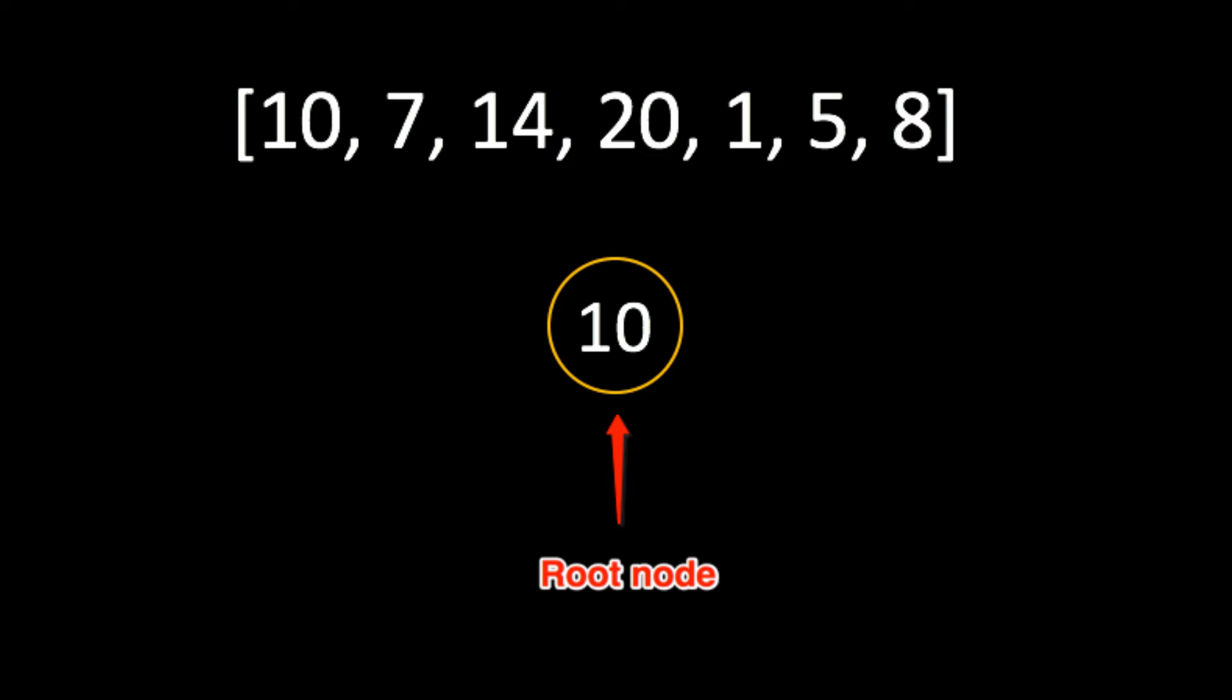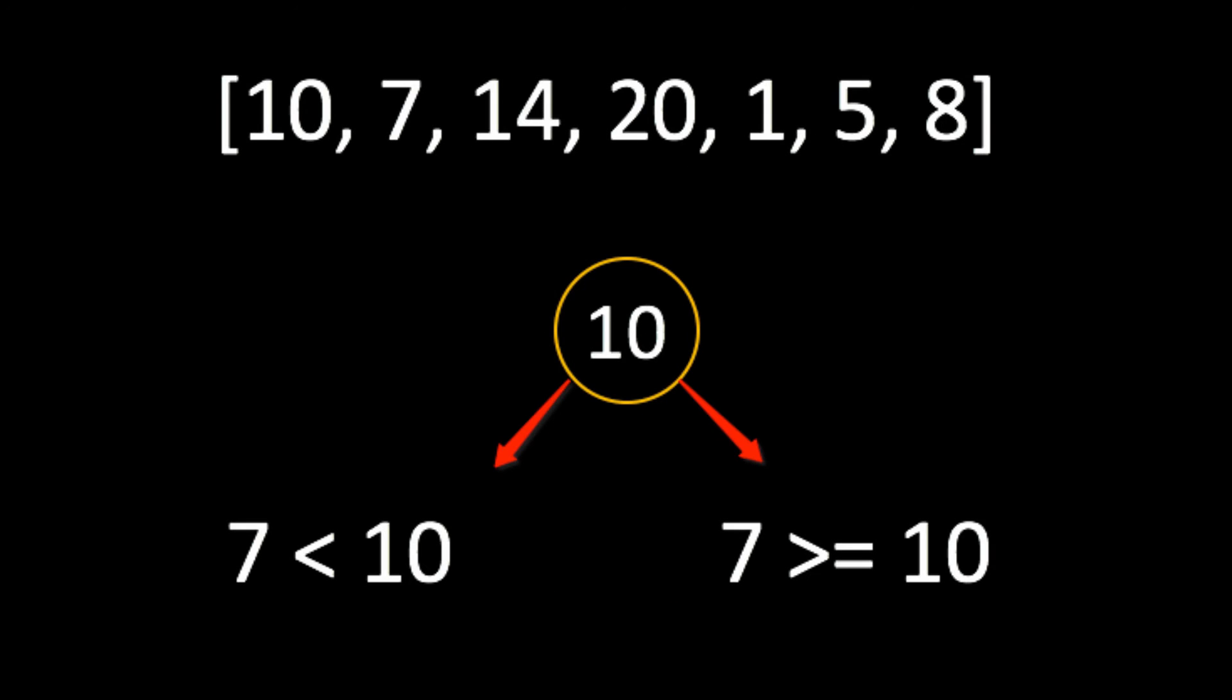Therefore, the first step we'll take for adding the 7 to the tree will be to compare it to the first node. If 7 is less than 10, it'll become the left child node.